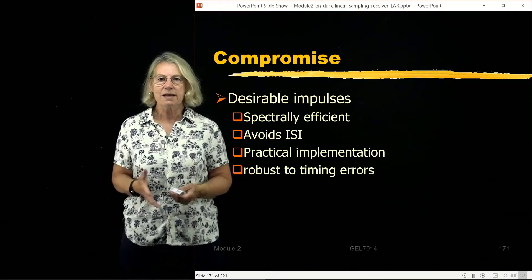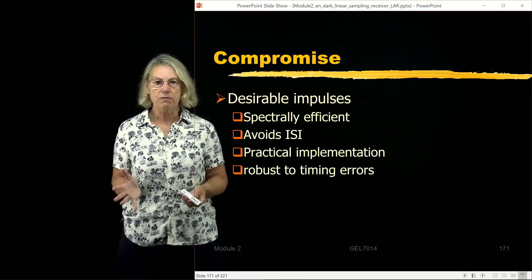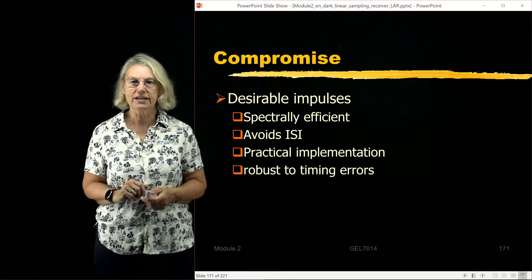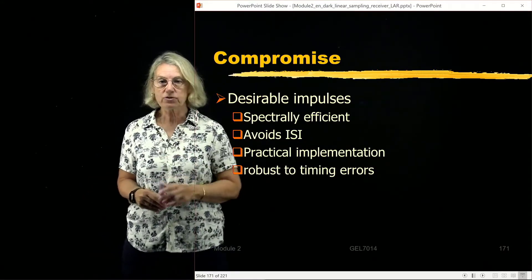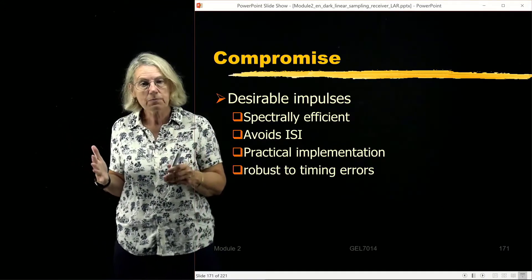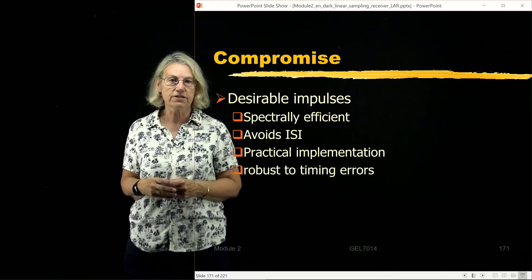So it's a compromise as I mentioned. It has many desirable aspects. So what are we looking for in a good Nyquist pulse? We want it to be spectrally efficient. Maybe it doesn't have to be ideal, doesn't have to be perfect like the ideal Nyquist pulse, but we would like it to still have good efficiency.